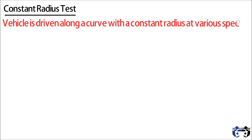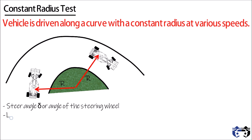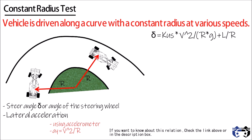In the constant radius test, the vehicle is driven along a curve with a constant radius at various speeds. Here you can see that the car is turning at a constant radius R at different speeds, for example V1 and V2. For this test, two things are required: the first is steer angle delta, or angle of steering wheel, and the second is lateral acceleration, which can be calculated using an accelerometer or using the steady-state lateral acceleration formula: ay equals V squared divided by R.